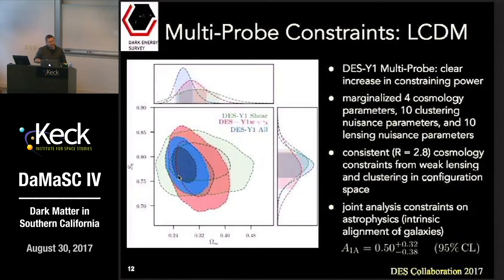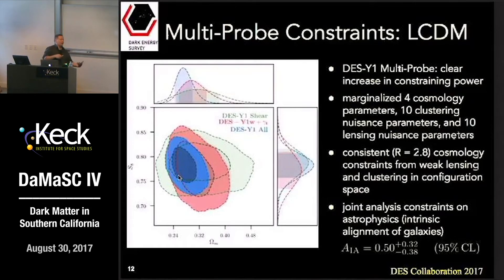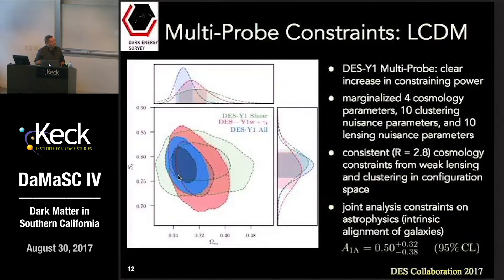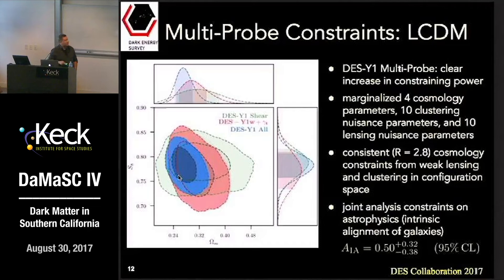S8 is a scaled version of sigma 8 — when showing sigma 8 versus omega matter there is a large degeneracy, and S8 is a combination of sigma 8 and omega matter that makes contours less degenerate. For those interested in astrophysics, intrinsic alignment of galaxies is one of the systematics we must account for in the nuisance parameter budget. We do find a hint for an intrinsic alignment signal in these red luminous galaxies.